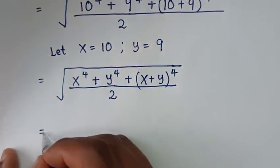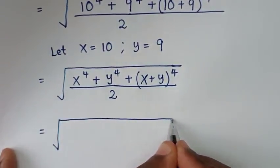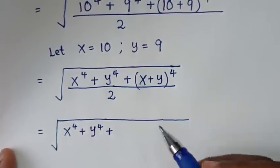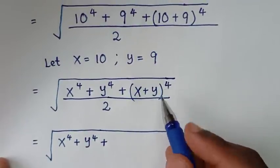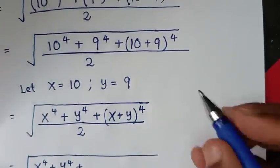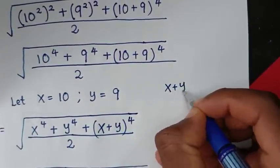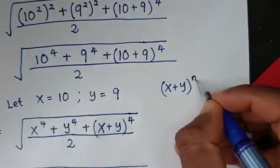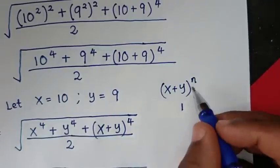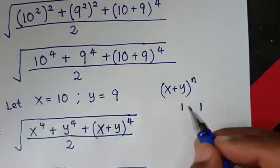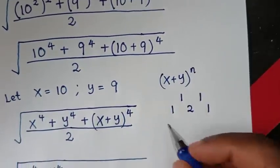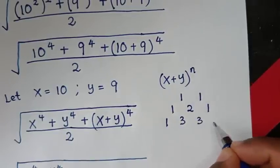In the next step it will be equal to the square root of x⁴ plus y⁴, plus we will expand (x + y)⁴ using the binomial theorem. The expression (x + y)⁴ is in the form (x + y)ⁿ. For the coefficients: when n=1 it is 1, 1; when n=2 it is 1, 2, 1; when n=3 it is 1, 3, 3, 1.